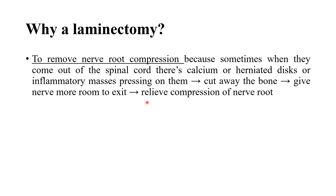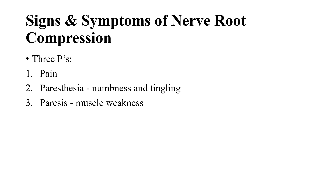The goal is to remove or relieve the lamina in order to relieve compression of the nerve root and its signs and symptoms. The main nerve root compression signs and symptoms are the 3 Ps: pain, paresthesia — which includes numbness and tingling — and paresis, meaning muscle weakness up to paralysis.